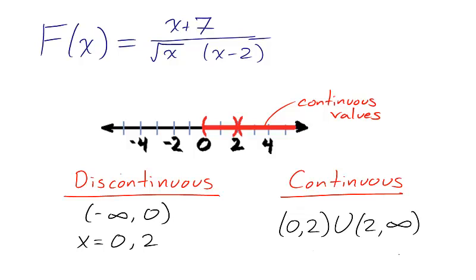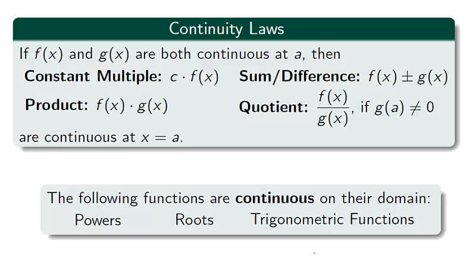The remaining values, 0 to 2 and 2 to infinity, excluding 2, are continuous by the quotient and product continuity laws. All of these values make the building blocks continuous. You should now be able to identify points in which a function is continuous from the equation alone.